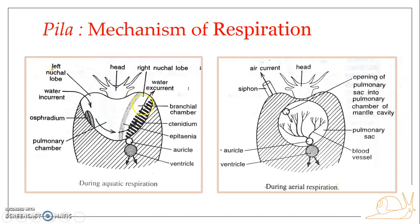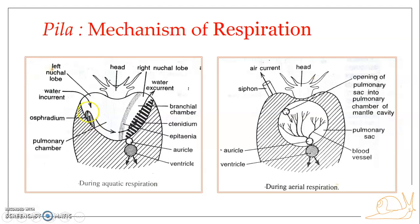There is a left nuchal lobe and a right nuchal lobe, and the epithenia divides the mantle cavity into the pulmonary chamber and the branchial chamber. The branchial chamber opens out through the right nuchal lobe, while the left nuchal lobe opens into the pulmonary chamber. During aquatic respiration, the two nuchal lobes form channel-like structures through which water moves inside — the water incurrent.